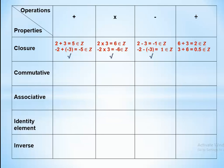So closure does not exist in division. Closure exists on addition, multiplication, and subtraction because all the answers of these operations belong to Z. The second property is commutative.